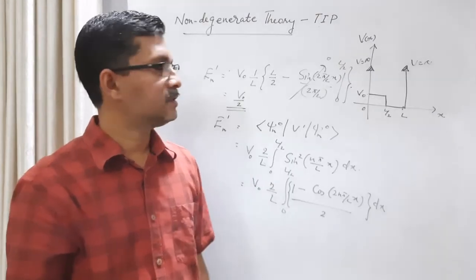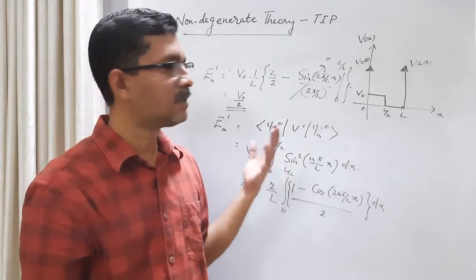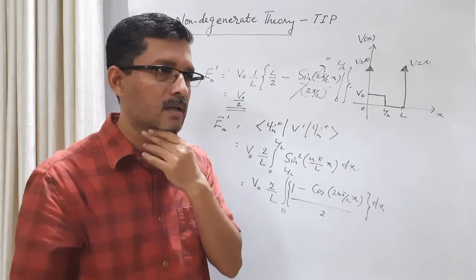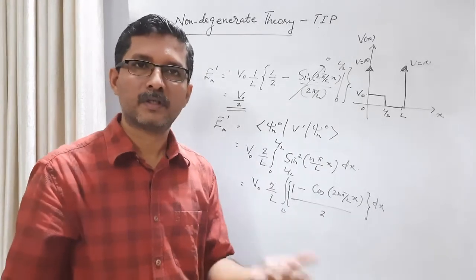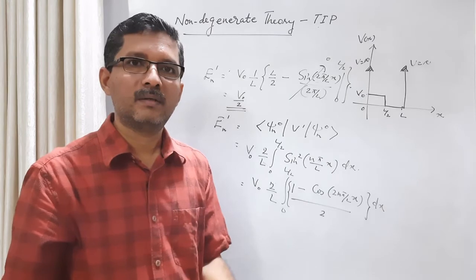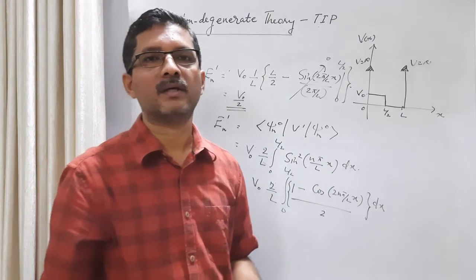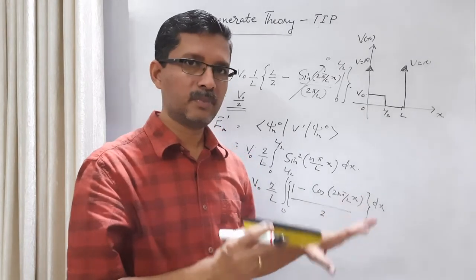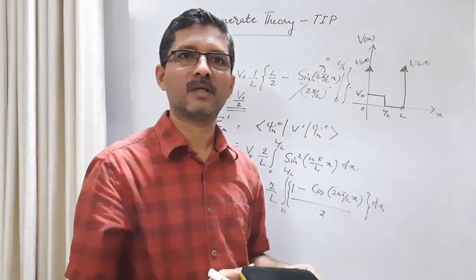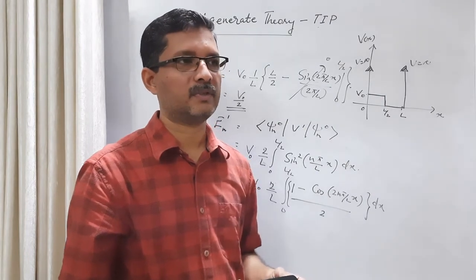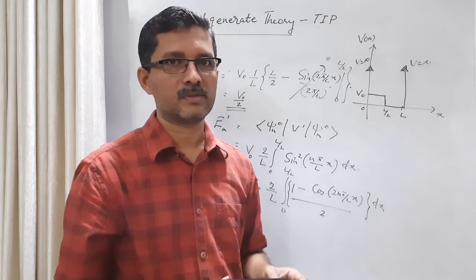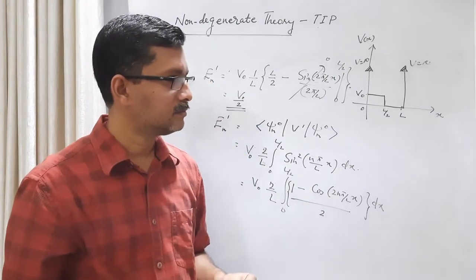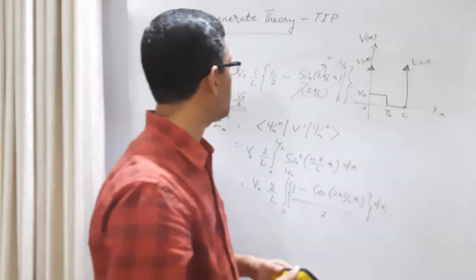We will next discuss delta function potentials. There are many types of perturbation potentials — proportional to x, proportional to x squared, proportional to sin function, cos function. In each case, we apply perturbation theory to the particle-in-a-box. We will integrate carefully. Let us continue our discussion on these problems.